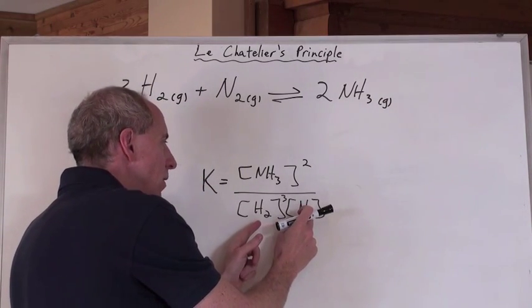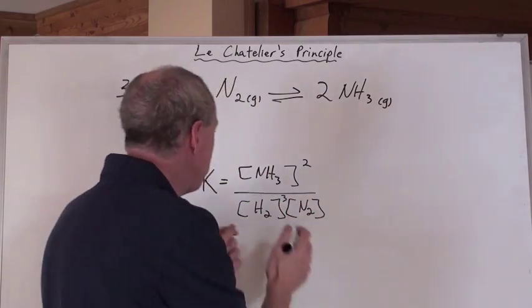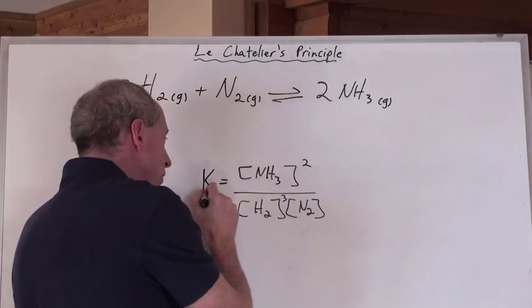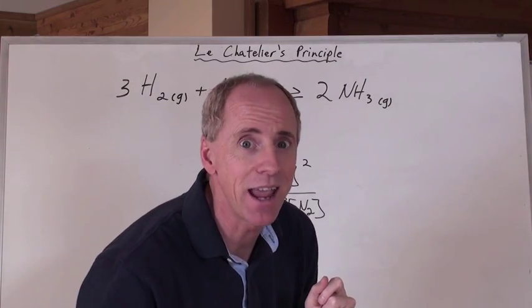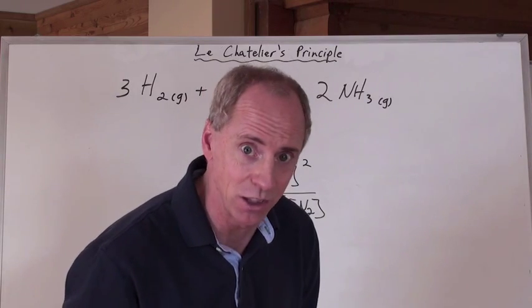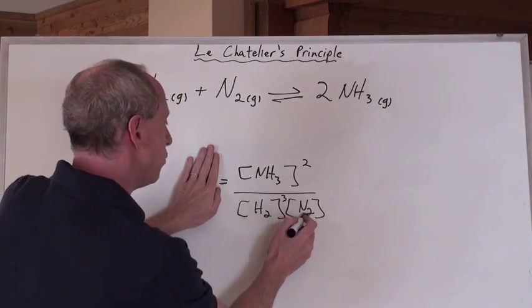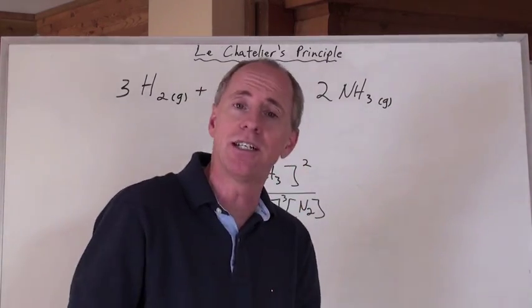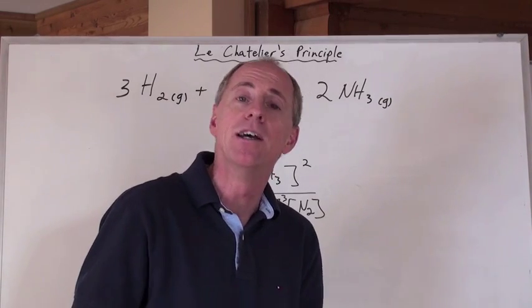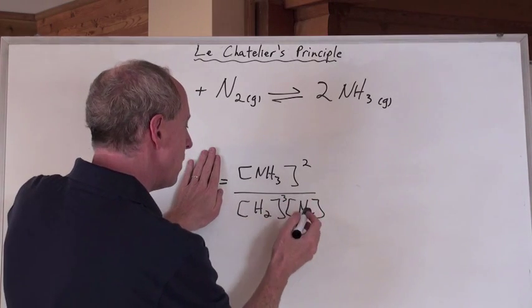You're adding this, and so now the denominator is getting bigger, which means then that this number is going to do what? That K value. It's going to stay the same because it's a K value, right?